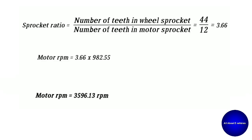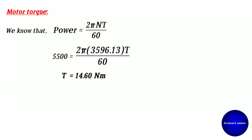We can find the sprocket ratio using the formula: number of teeth in the wheel sprocket divided by number of teeth in the motor sprocket, which is 44 divided by 12, giving us 3.66. We can then easily find the motor RPM as 3.66 multiplied by 982.55, giving a motor RPM of 3596.13 RPM.